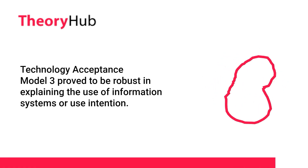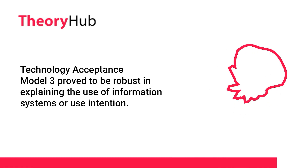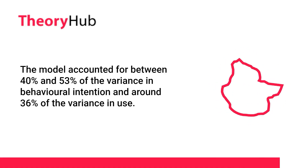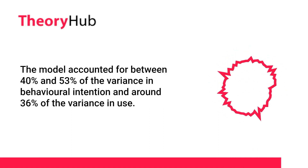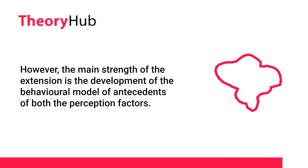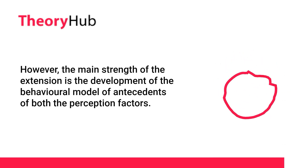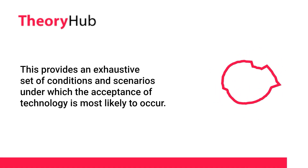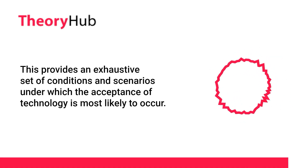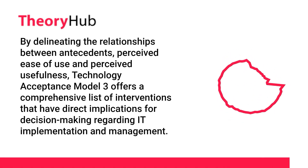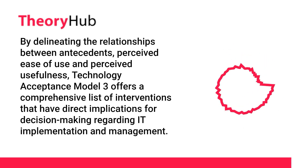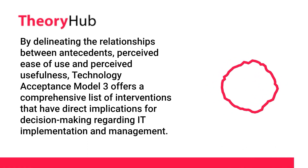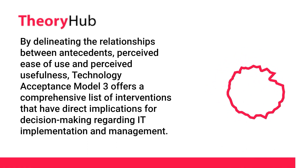Technology Acceptance Model 3 proved to be robust in explaining the use of information systems or use intention. The model accounted for between 40% and 53% of the variance in behavioral intention and around 36% of the variance in use. The main strength of the extension is the development of the behavioral model of antecedents of both perception factors, providing an exhaustive set of conditions and scenarios under which acceptance of technology is most likely to occur. By delineating the relationships between antecedents, perceived ease of use, and perceived usefulness, Technology Acceptance Model 3 offers a comprehensive list of interventions with direct implications for decision-making regarding IT implementation and management.